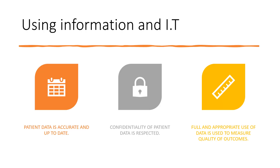The sixth pillar involves using information and IT. Patient data should be accurate and up-to-date. Confidentiality of patient data must be respected. Full and appropriate use of data is used to measure quality of outcomes. Saving information through computerized systems helps to identify and track patients effectively.